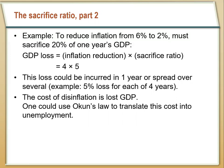We can bear this sacrifice ratio all at once and lose 20 percent of GDP in one year, or we could spread it out over time, perhaps losing five percent of GDP over the next four years. But either way you slice it, the sacrifice ratio says that it is fairly costly for us to decrease inflation.